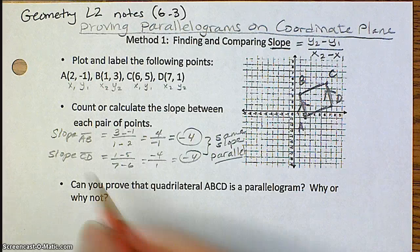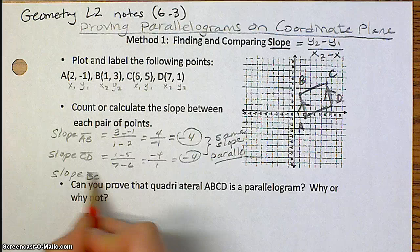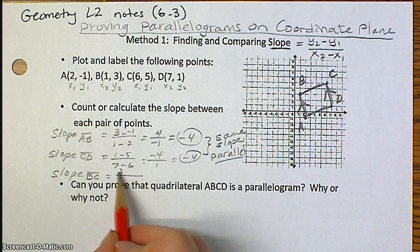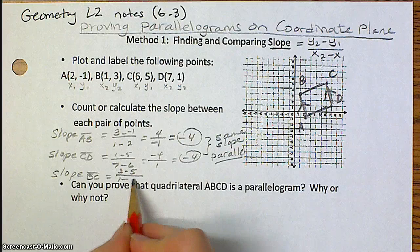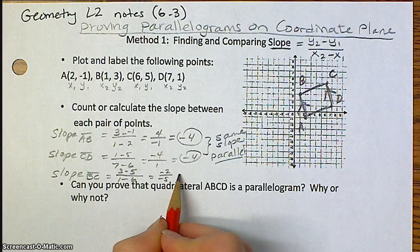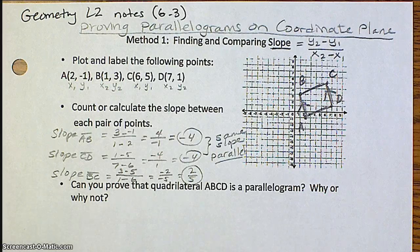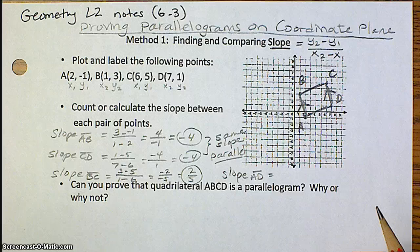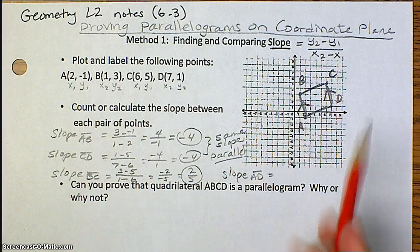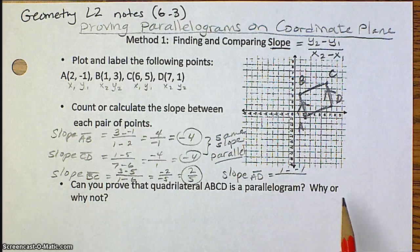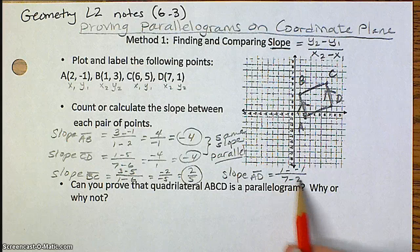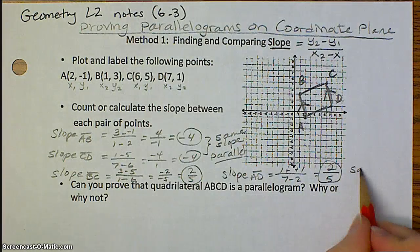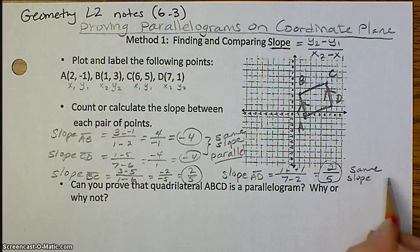Now I need to do the same thing for the other sides. So I'm going to find the slope of segment BC. So 3 minus 5 and 1 minus 6. So negative 2 over negative 5, which just simplifies to 2 fifths. And do the same thing for the last segment, AD. So using the points A and D, 1 minus negative 1, watch your signs there, and then 7 minus 2. So minus negative really becomes a positive, 2 fifths. And 2 fifths and 2 fifths are the same. So same slope means that they're parallel lines.